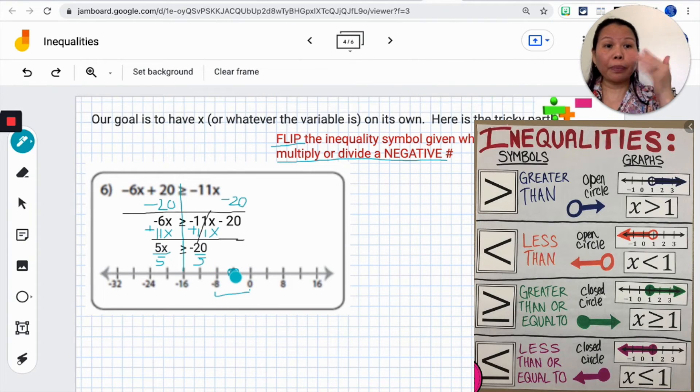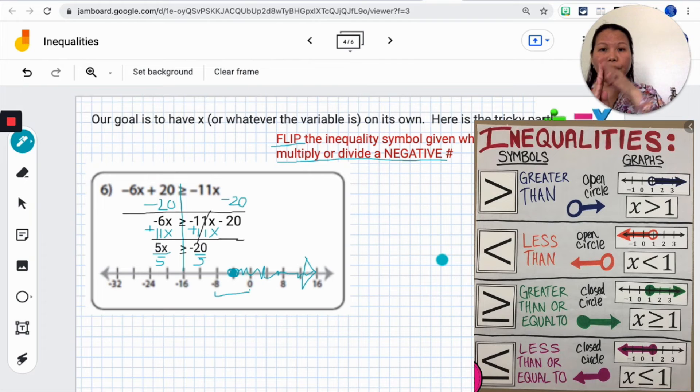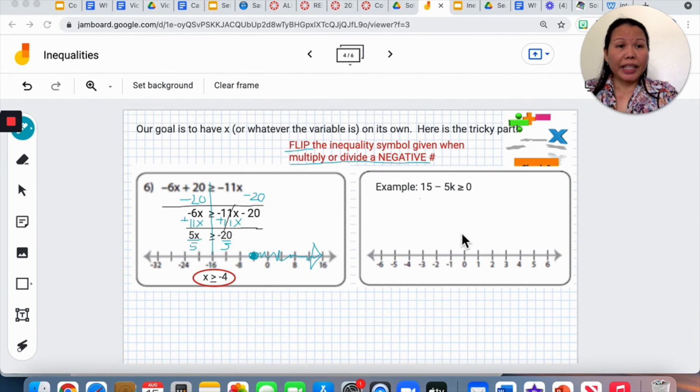X greater than negative 4, it would be negative 3, negative 2, going to 0 in that direction. So I would have to shade it to the right hand side and make my arrow to show that it's going on forever to the right of negative 4. This is just an example and it might or might not be on the work that I assigned.